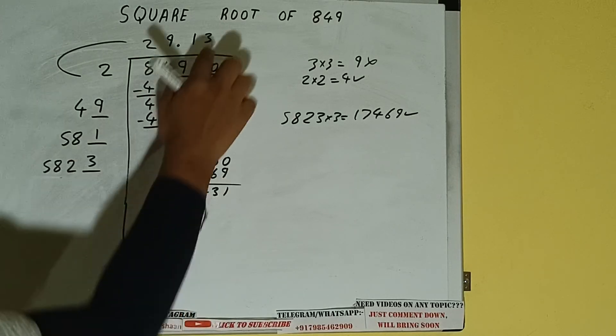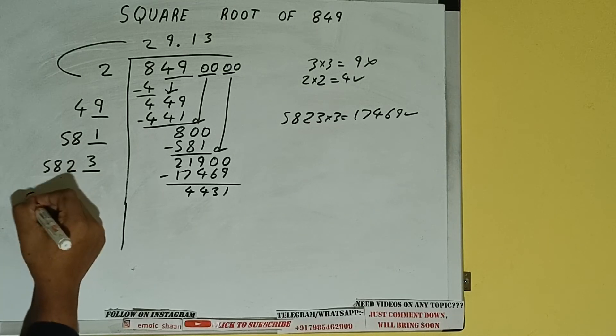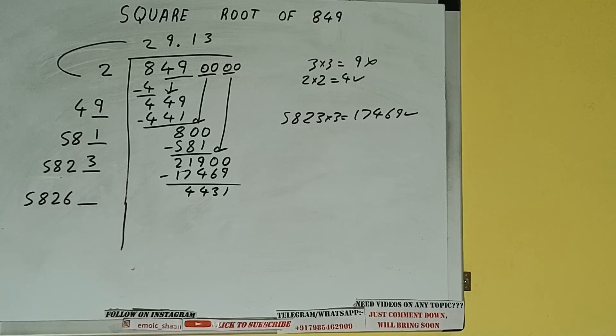Now 5823 into 3 we did, so add both. 5823 plus 3 will be 5826 and 1 digit extra.